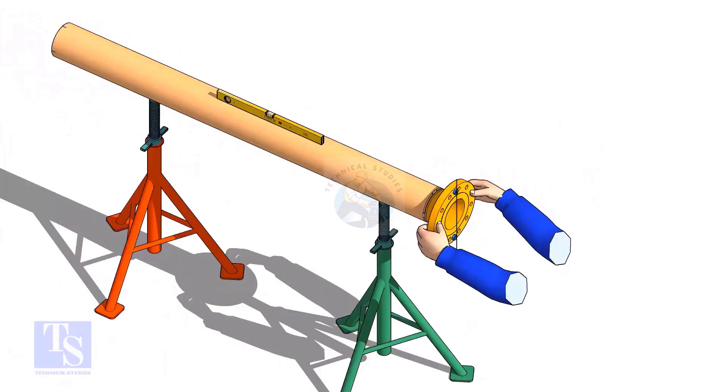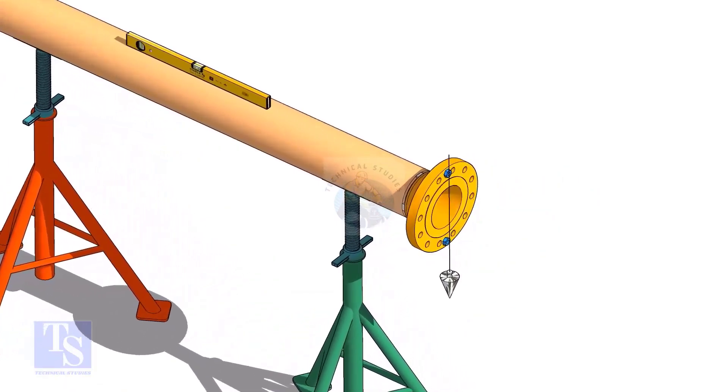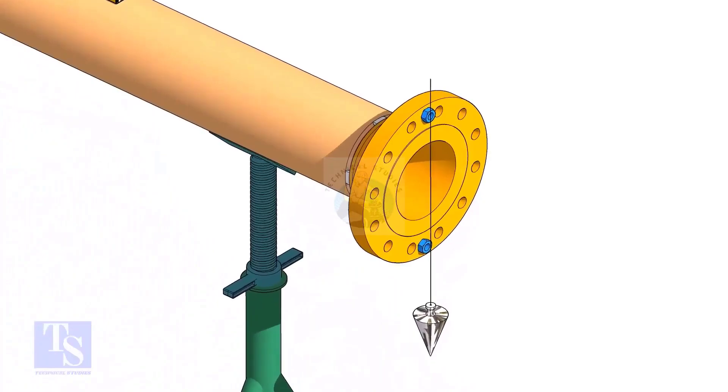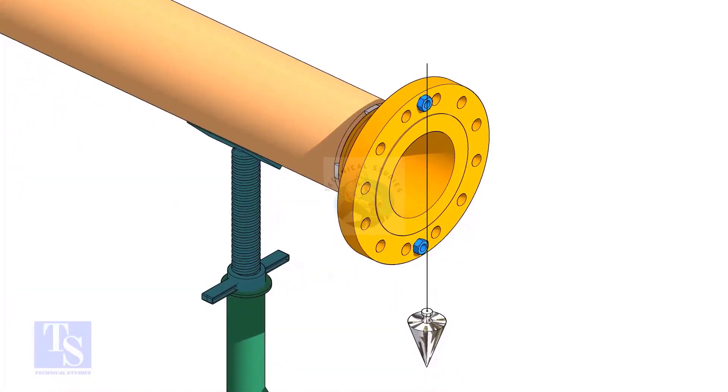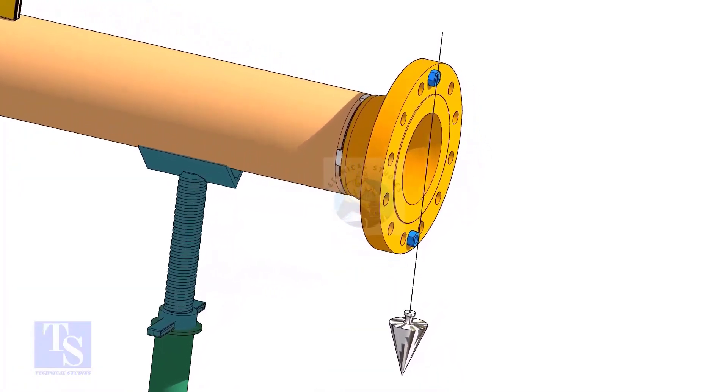Check the pipe using a plumb. Level the pipe. Put a plumb through the center of the flange on a nut.